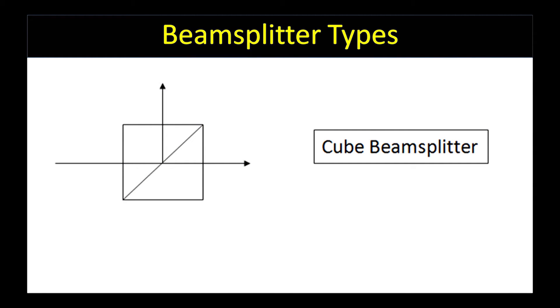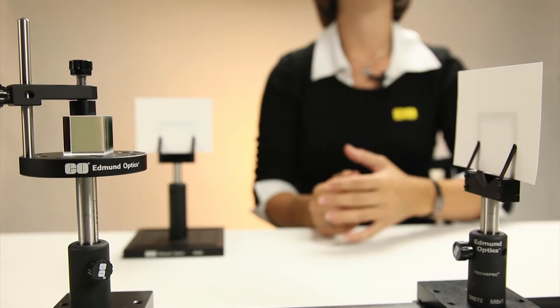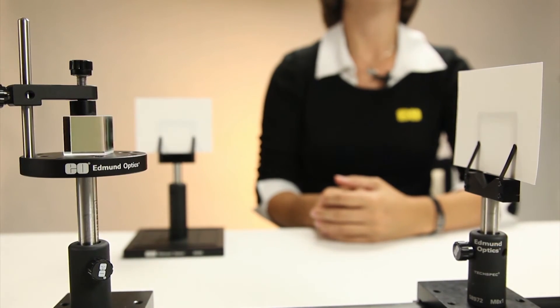Disadvantages of a cube are that it is bulkier and heavier than other types of beam splitters, and doesn't cover as wide a wavelength range as pellicle or polka dot beam splitters, though we do offer many different coating options. Also, cube beam splitters should only be used with collimated beams, since converging and diverging beams contribute to considerable image quality degradation.